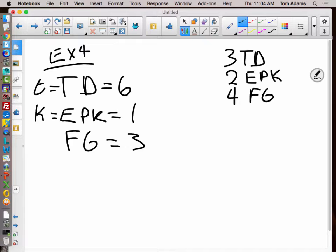And what about field goals? F. We'll use F. Now, according to this, they had three touchdowns, plus two extra point kicks, plus four field goals. And we've got to figure out what their score was total.